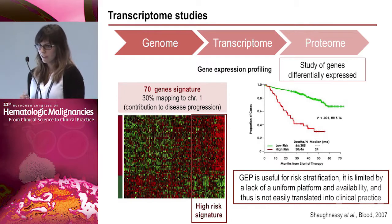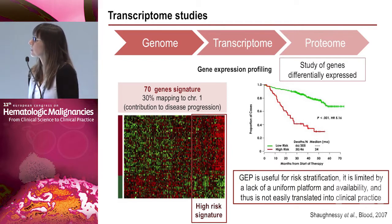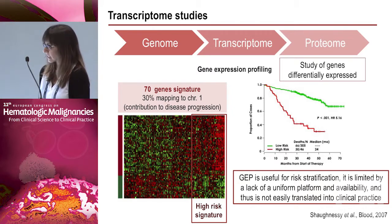It is also important to study the transcriptome — gene expression profiling — which examines differentially expressed genes. Different studies have identified a high-risk gene expression signature for multiple myeloma patients. This signature includes 70 genes, and 30% of them map to chromosome 1, which we know is associated with poor prognosis. This high-risk signature has a significant impact on overall survival. However, gene expression profiling has an important limitation: there is no uniformity of platforms and limited availability, making it difficult to translate into routine clinical practice.